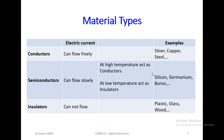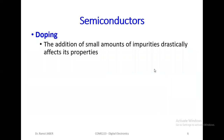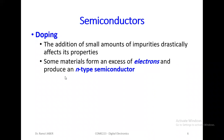Silicon as a semiconductor is not good by itself, so we'll do something called doping. Doping will transform it — we'll turn the semiconductor into the type we want.